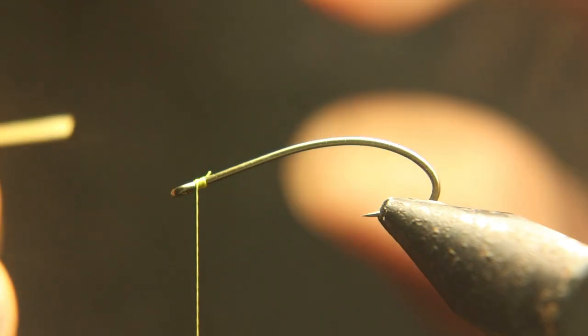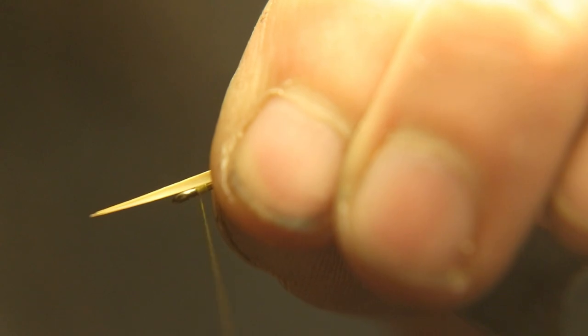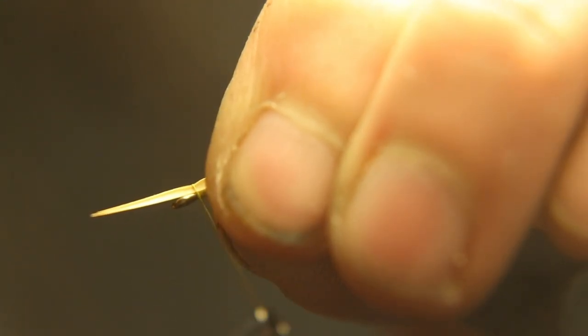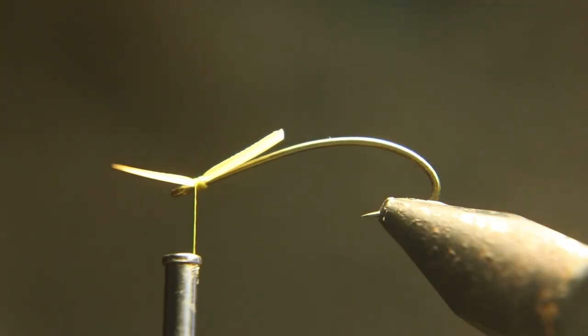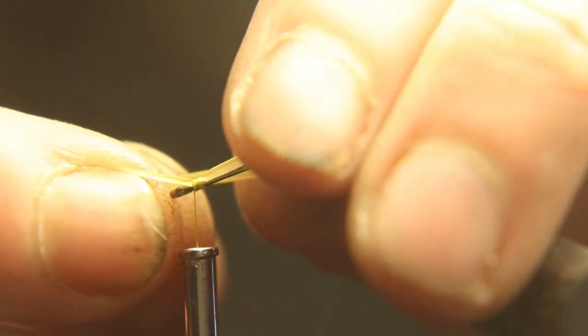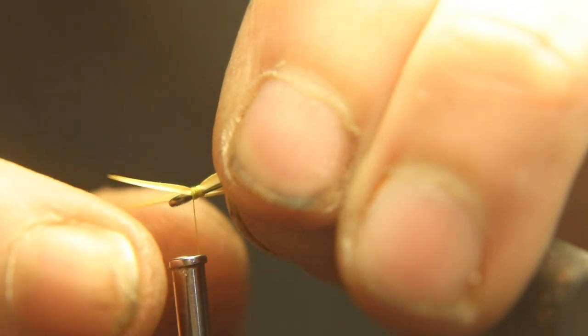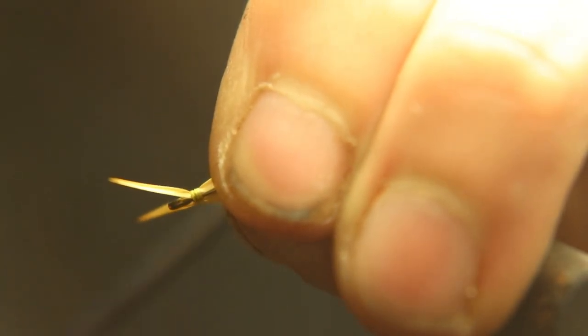We're going to start the thread right behind the eye of the hook, and then we're going to take two of these burnt yellow, kind of orangish goose biots. We're going to tie one on each side of the eye. These represent the antenna, then we're going to tie it off and whip finish it.